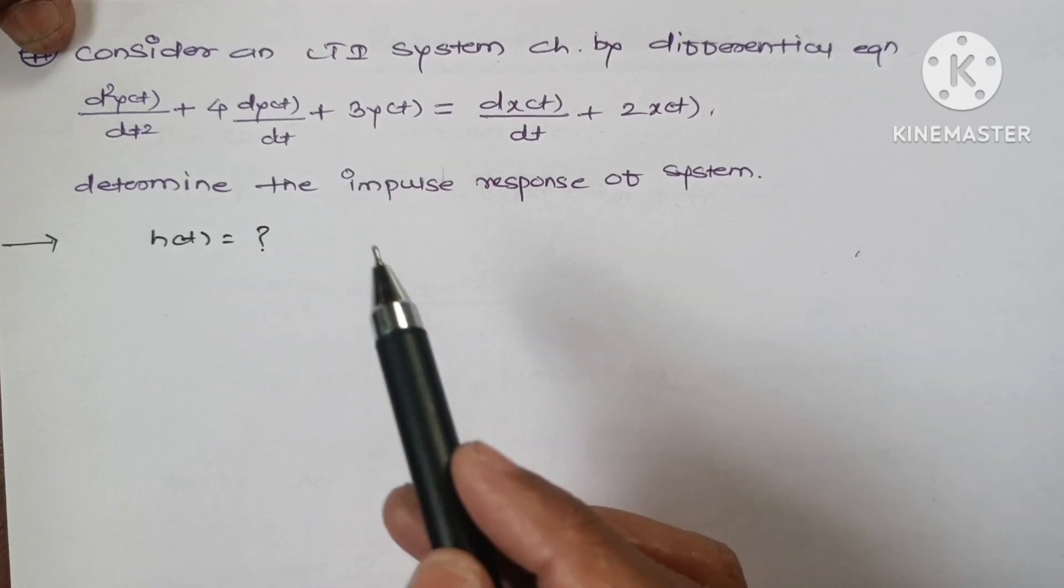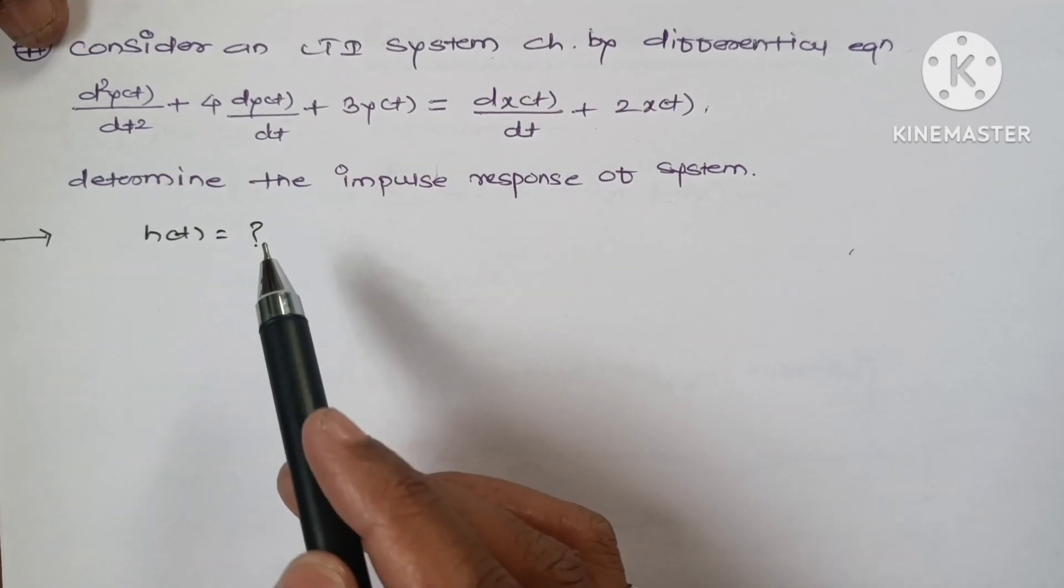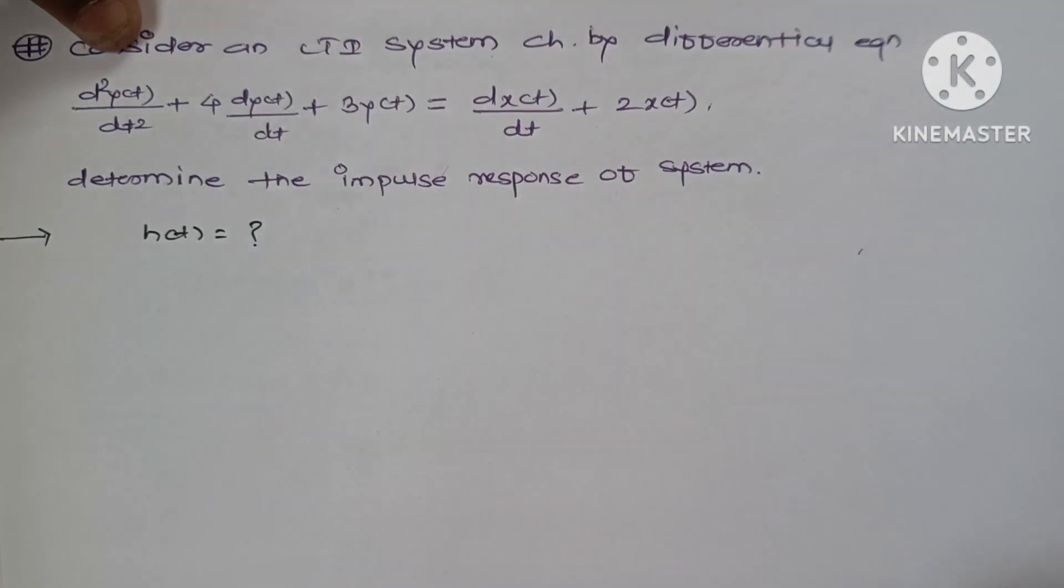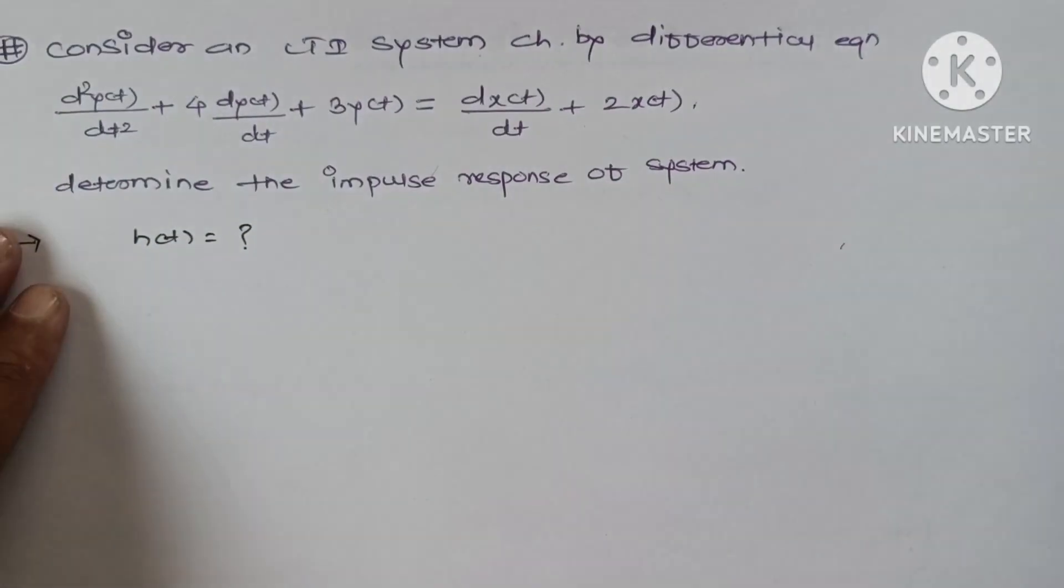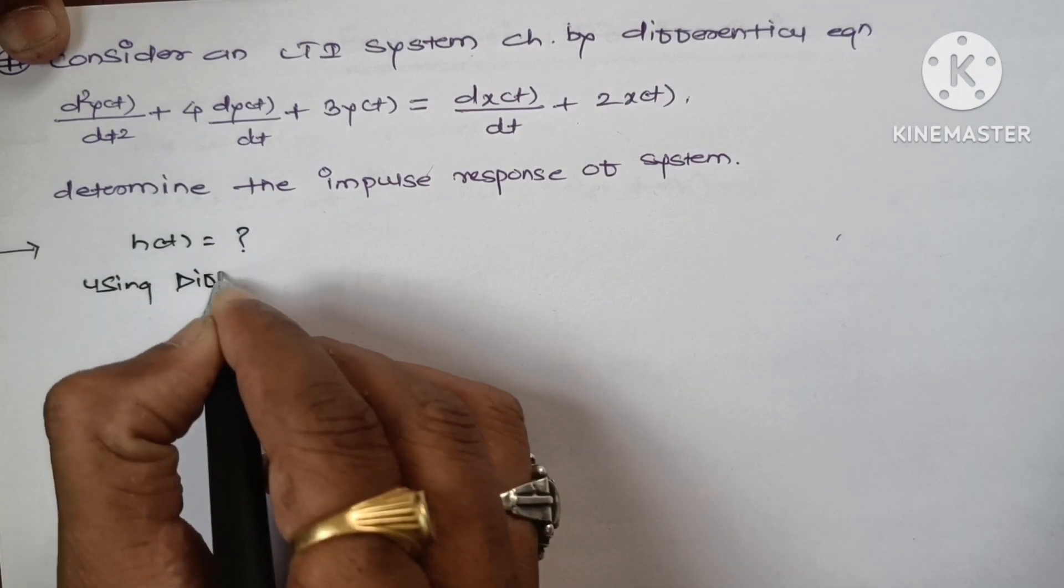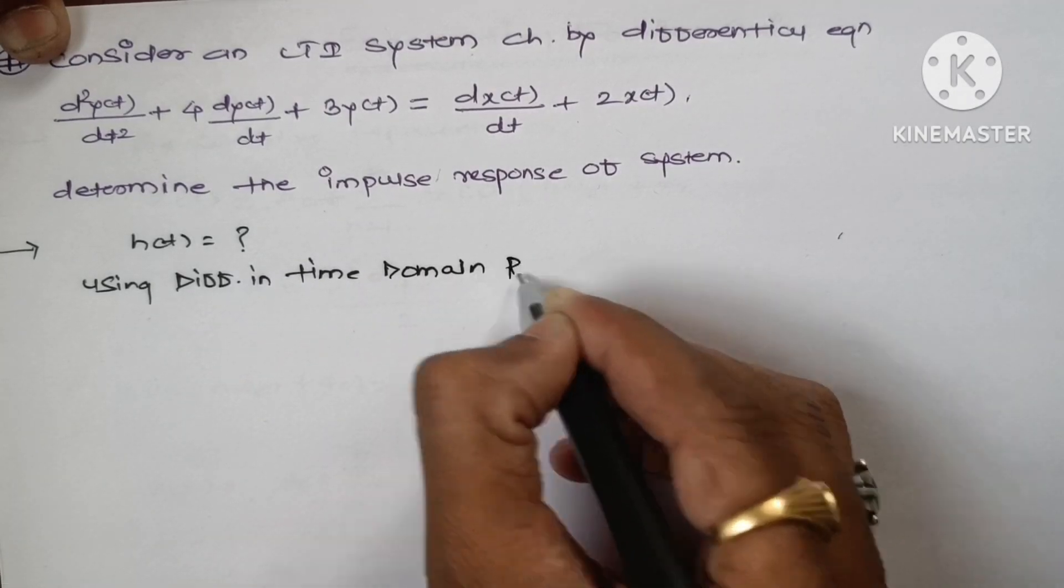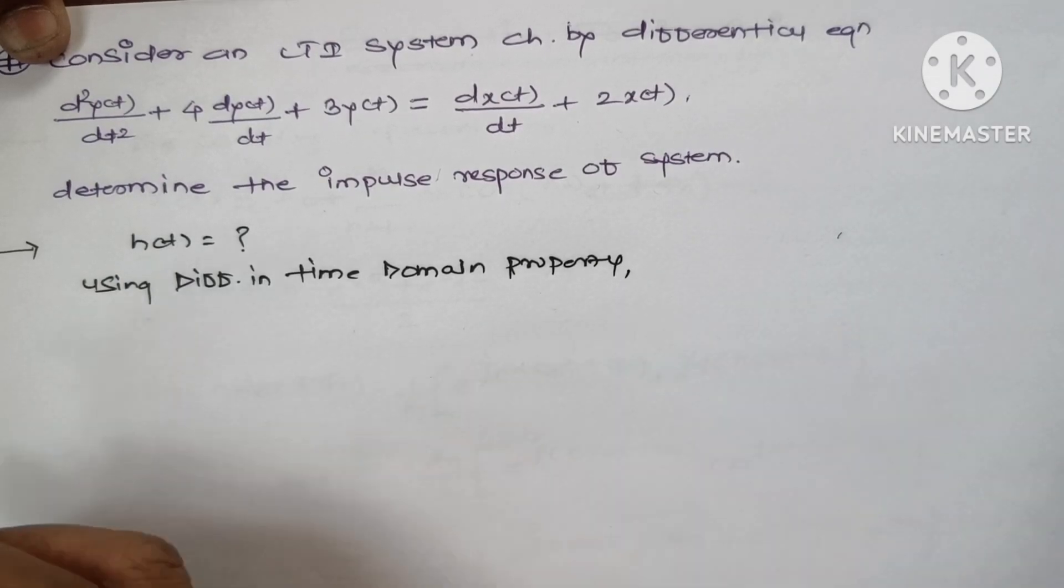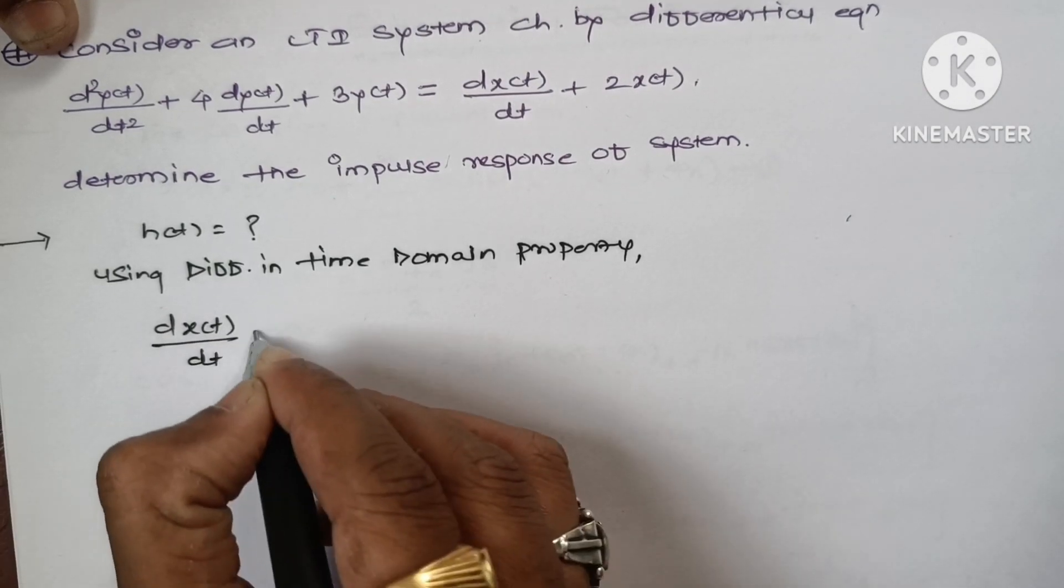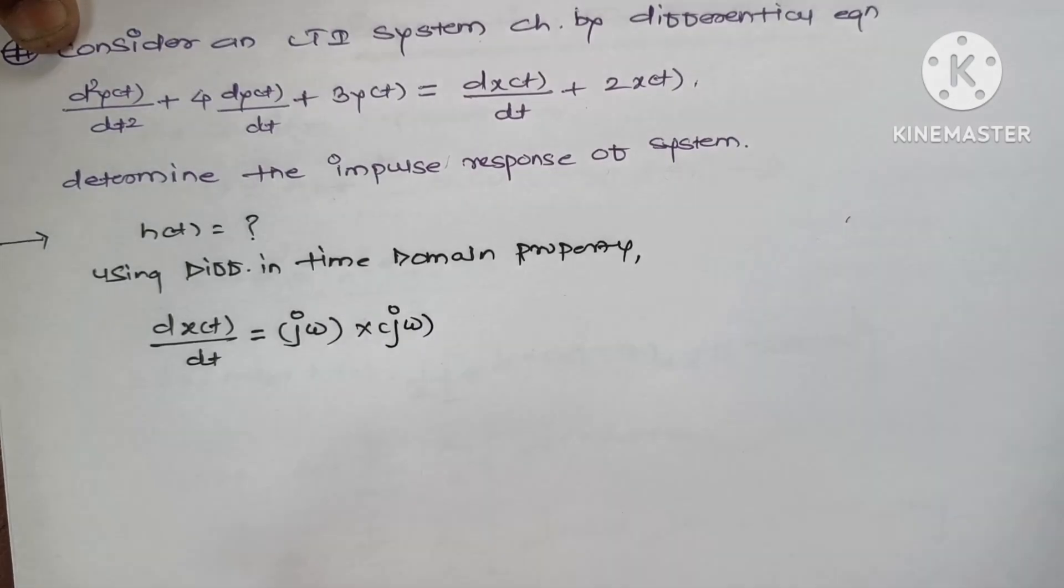So we can use differentiation in time domain property. I am writing it here: using differentiation in time domain property, which is dx(t)/dt equals jω times x(jω).